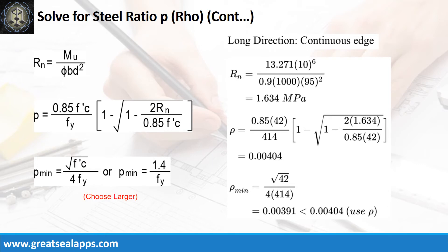Given long direction, continuous edge moment equals 13.271 kN·m; resistance factor equals 0.9; B equals 1,000 mm; and D equals 95 mm. The beam design ratio RN equals 1.634 MPa, and reinforcement ratio ρ equals 0.003. Use ρ minimum of 0.004.